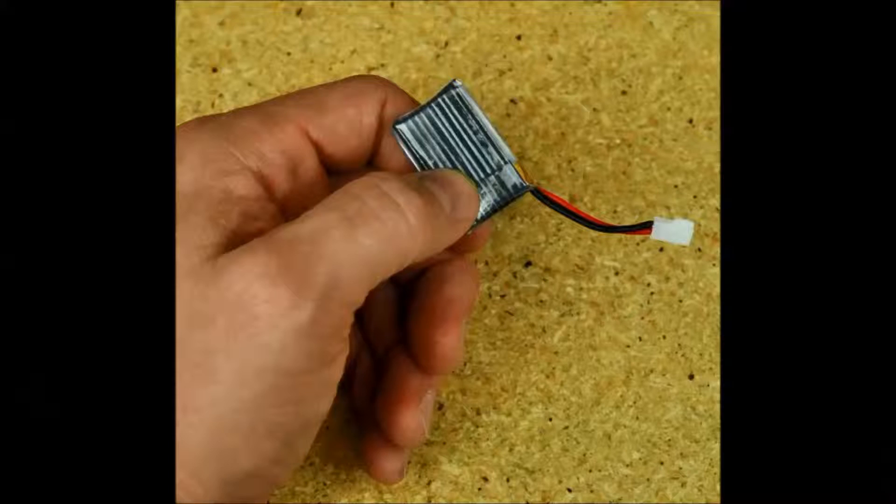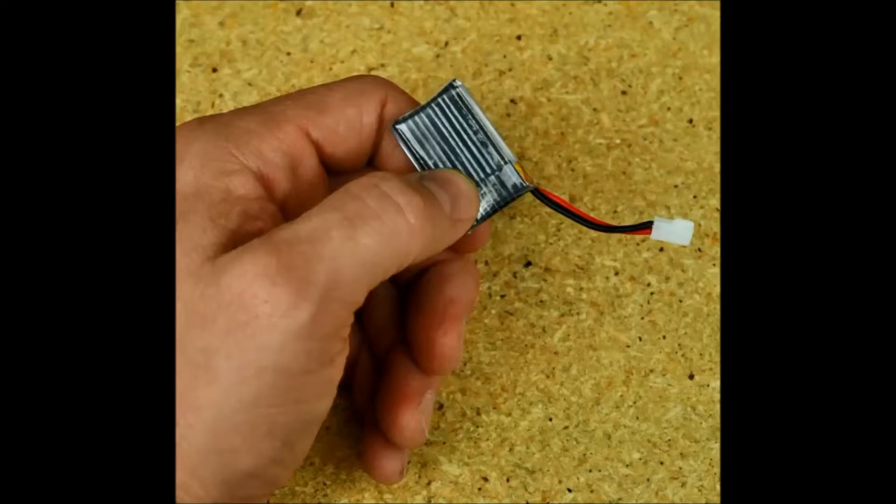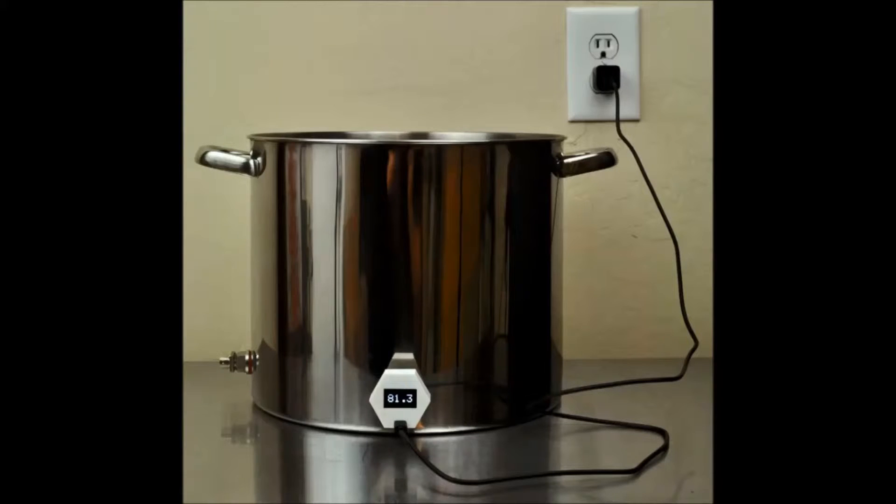The Potbelly uses a rechargeable lithium ion battery. These batteries can be fully charged in less than 30 minutes and should last around 24 hours of continuous operation. It can even be charged while in use.